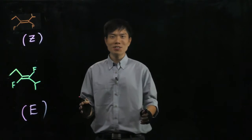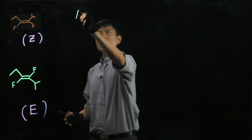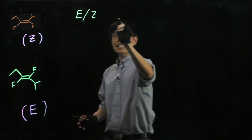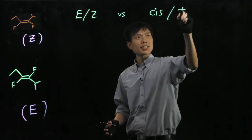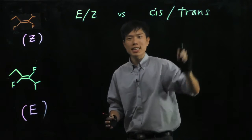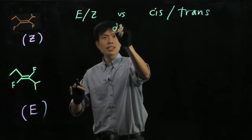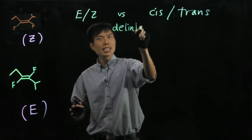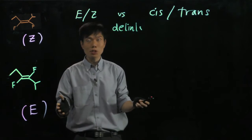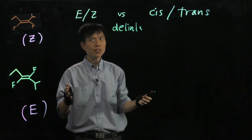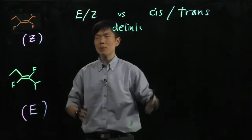Here I'm trying to dispel any misconception between E/Z and cis-trans of a double bond. Please de-link these two concepts — they are not related. In the naming of a molecule, either you use E/Z or cis-trans if it's applicable.